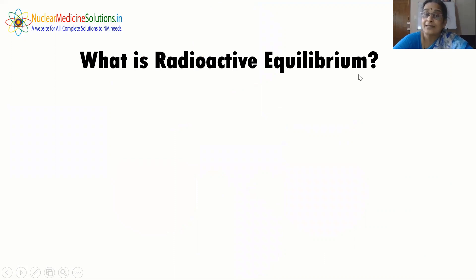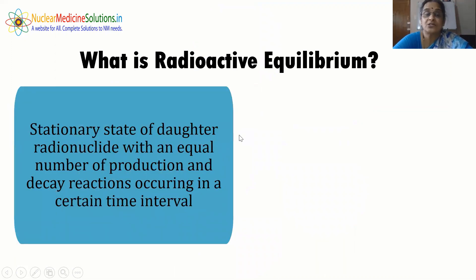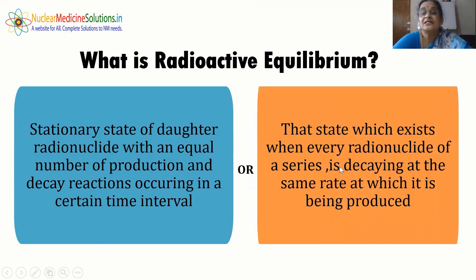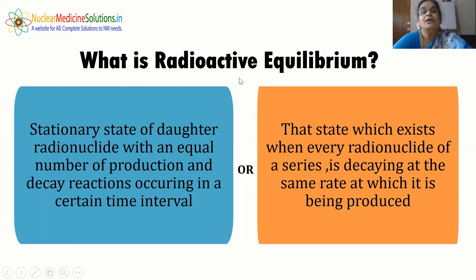What is radioactive equilibrium? It is the stationary state of a daughter radionuclide with an equal number of production and decay reactions occurring in a certain time interval — or the state which exists when every radionuclide of a series is decaying at the same rate at which it is being produced. As an analogy, if my bank balance is X rupees and my salary delta is credited and spent throughout the month, the remaining amount will again be X rupees. This is analogous to the production and decay of the intermediate daughter radionuclide in the series.